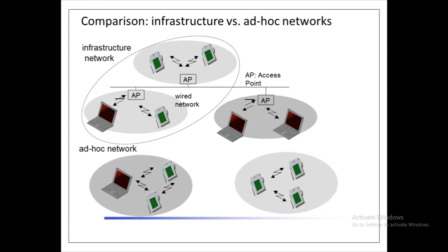Several wireless networks may form one logical wireless network. The access points, together with the fixed network in between, can connect several wireless networks to form a larger network. The shaded area represents the actual radio coverage, and the dotted lines represent the infrastructure network for each of the two access points.